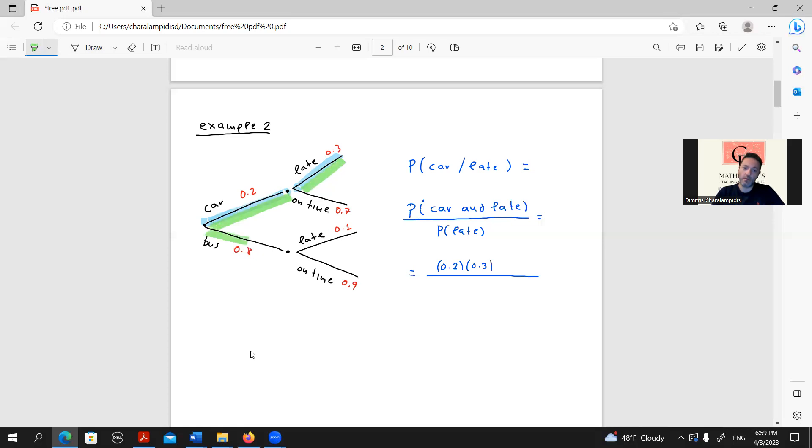Take their probabilities separately, 0.2 times 0.3 and 0.8 times 0.1 and add them. So it should be 0.06 over 0.14. And that would be the answer on that.